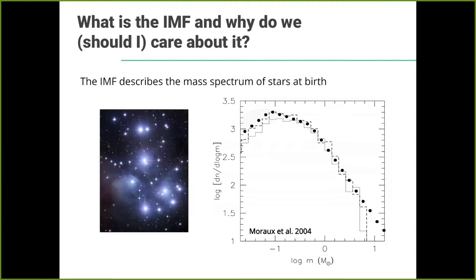Daniel already talked a bit about it, but I thought it was useful to start with a brief introduction to the IMF. In short, the IMF is the mass spectrum of stars at birth. You have a molecular cloud that collapses forming new stars, so you can go to your favorite star cluster and count how many stars you have of different stellar masses. You build this histogram and the shape of that distribution is basically what we talk about.